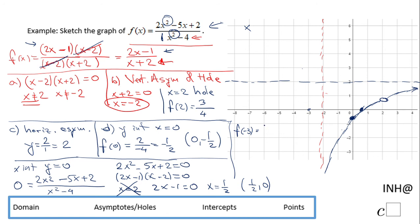I'm gonna have 2 times negative 3 squared minus 5 times negative 3 plus 2 over negative 3 squared minus 4.